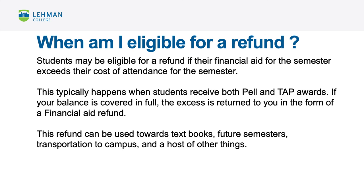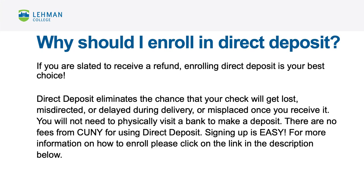Students may be eligible for a refund if their financial aid for the semester exceeds their cost of attendance. This typically happens when students receive both Pell and TAP awards. If your balance is covered in full, the excess is returned to you in the form of a financial aid refund, which can be used towards textbooks, future semesters, transportation to campus, and more. If you are slated to receive a refund, enrolling in direct deposit is your best choice. Direct deposit eliminates the chance that your check will get lost, misdirected, delayed, or misplaced. There are no fees from CUNY for using direct deposit. For more information on how to enroll, please click on the link in the description below.